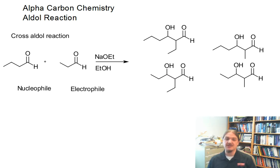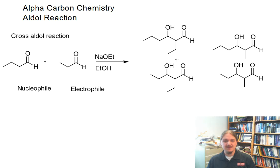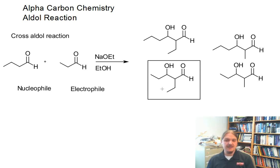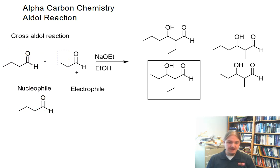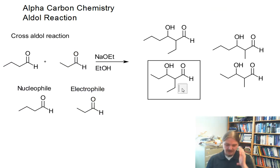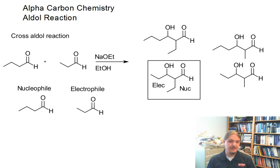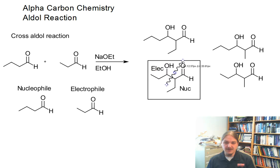So fortunately, there are a couple of solutions to this problem, and I'm going to share them. For example, what if we really only wanted this aldol product that I have in the box? This is an aldol product when butanol was the nucleophile and propanol is the electrophile. The nucleophile is the thing that still has the carbonyl group as part of its aldol structure, and the electrophile is the one that becomes the aldol.